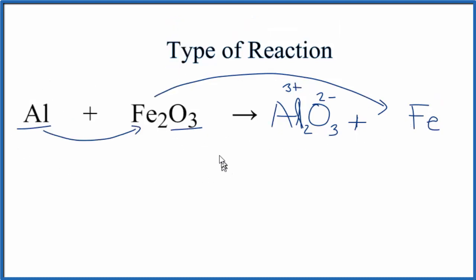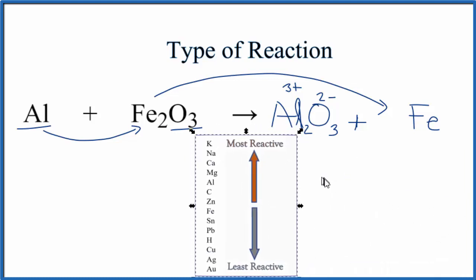With single replacement reactions, one question we have to ask is, will the Al actually replace the iron? Is this active enough to replace iron? And to figure that out, we use the activity series here. So on the activity series, we can see coming down, here's aluminum, and then here's iron lower down.